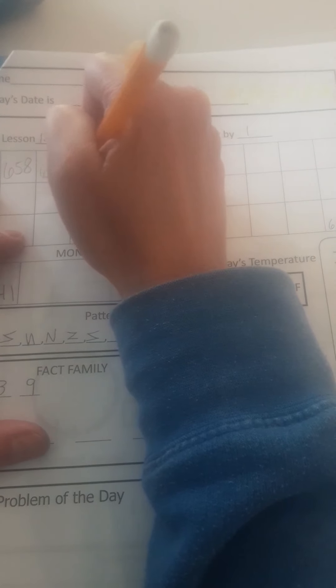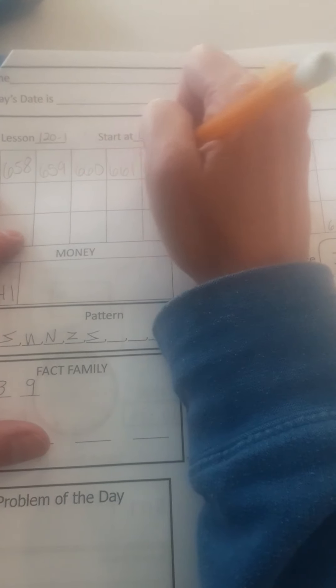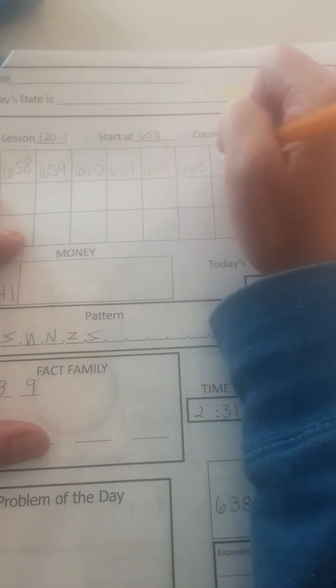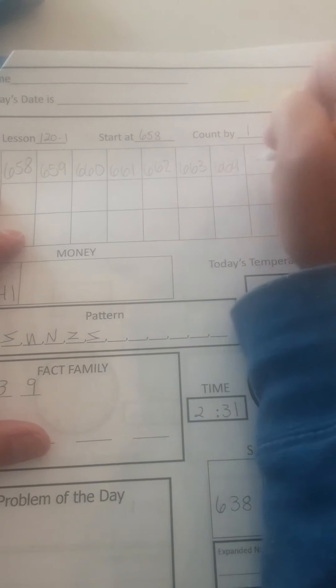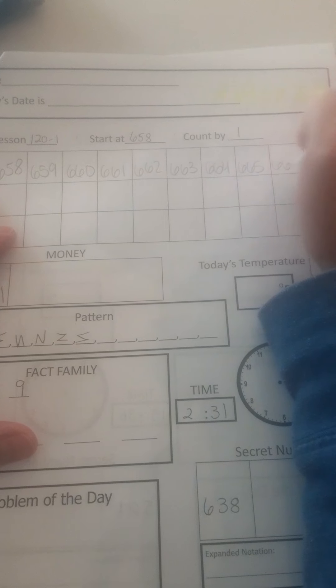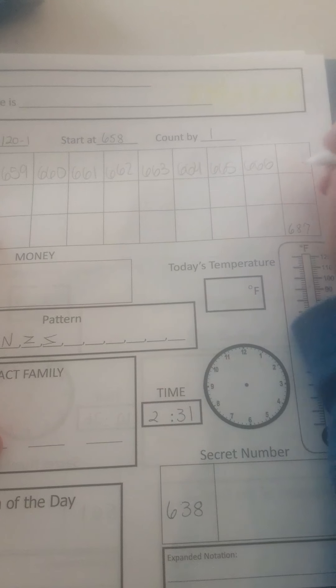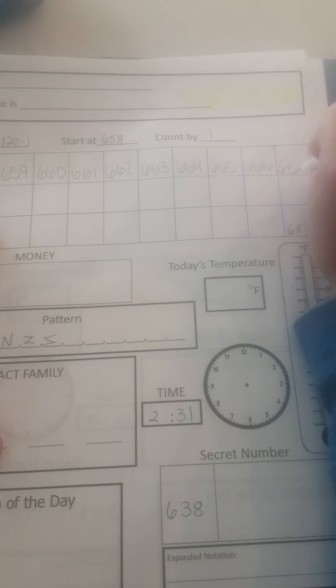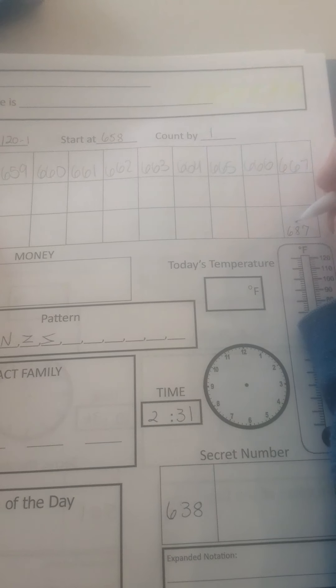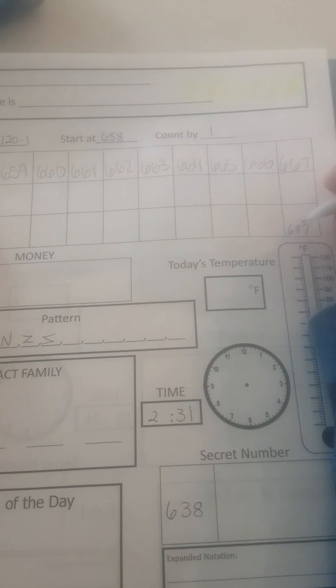659, 660, 661, 662, 663, 664, 665, 666, 667. You can go ahead and finish those, and you're going to end at 687.